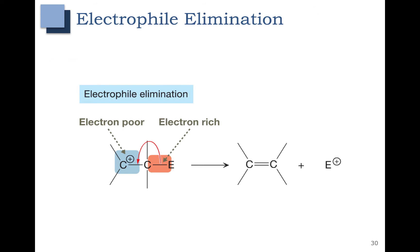Electrophile elimination is the opposite of electrophilic addition. In this case we are going to kick out a species that is positively charged or has a large delta plus. The carbon-electrophile bond — imagine the E as being our leaving group — is going to break and that becomes a carbon-carbon pi bond. So blue electrons become a blue pi bond. This might look similar to the E2 reaction, but remember in the E2 reaction we had a base reacting, and here we don't — we have a positively charged species.